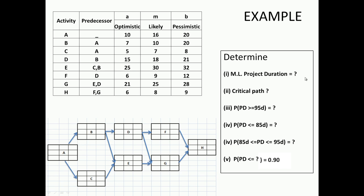One is, we can look for the most likely project duration. We can certainly get what the critical path is. PERT also lets us ask: what is the probability that the project duration is greater than or equal to 95 days? We could not ask such a question in CPM. Or, what is the probability that the project duration is less than or equal to 85 days? Or between 85 and 95 days? Or, given that my probability is 90 percent, what is the duration I should finish my project at 90 percent probability? All of these types of questions can be asked from your basic PERT data.